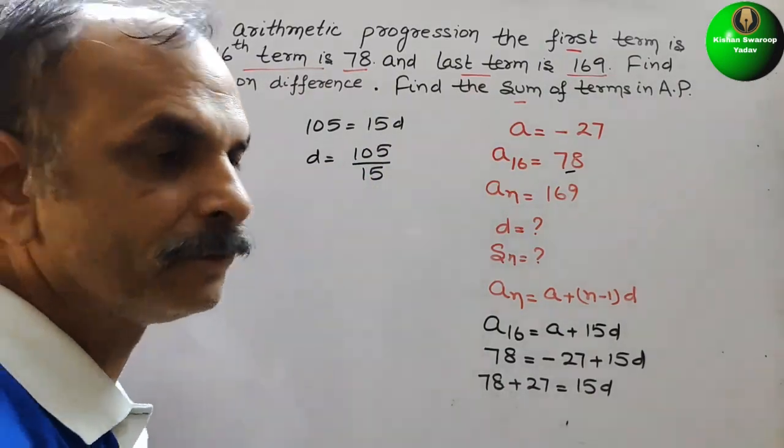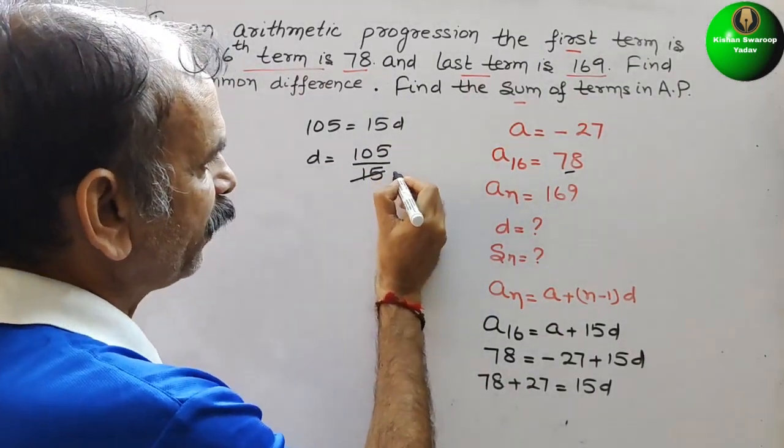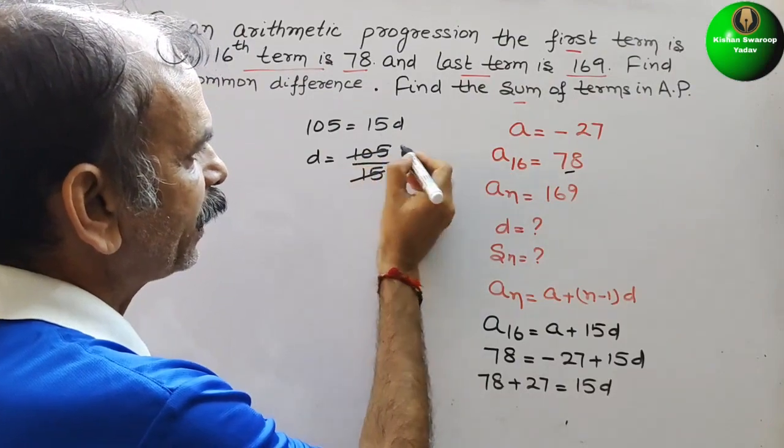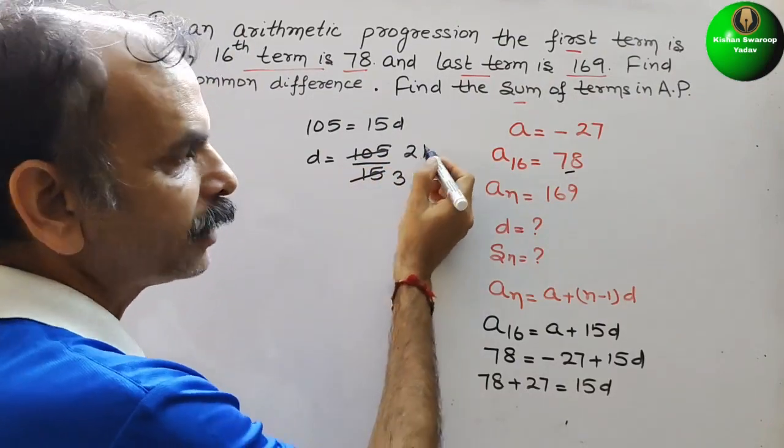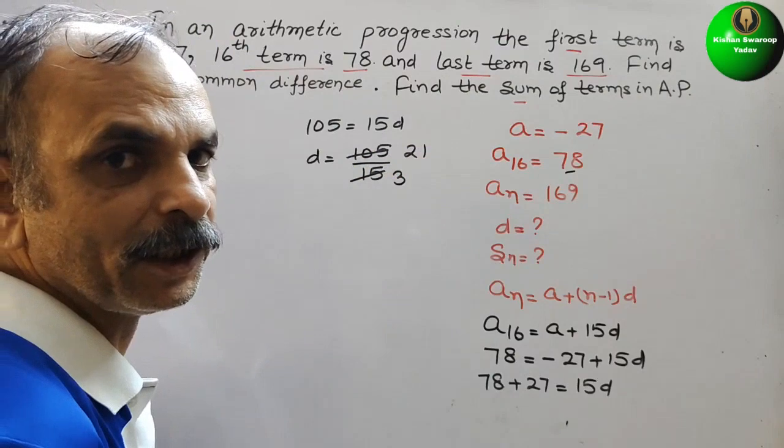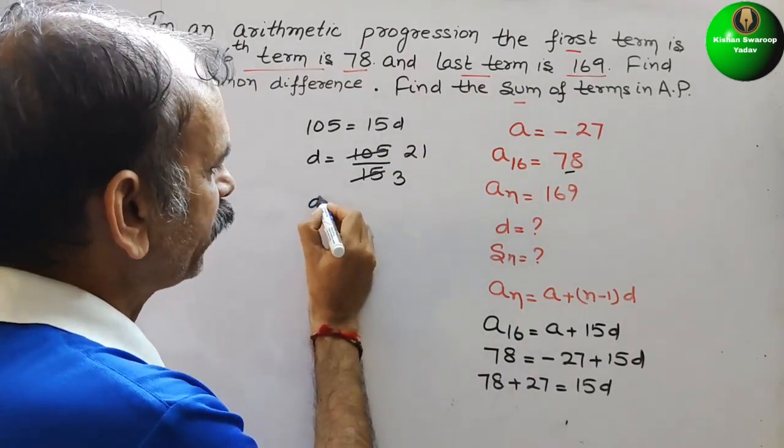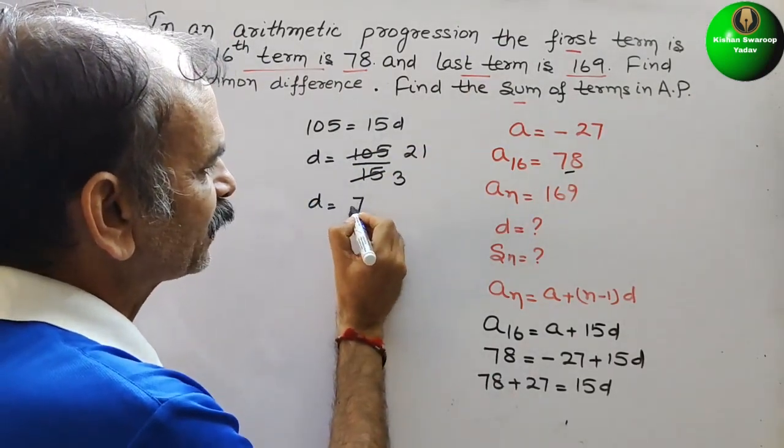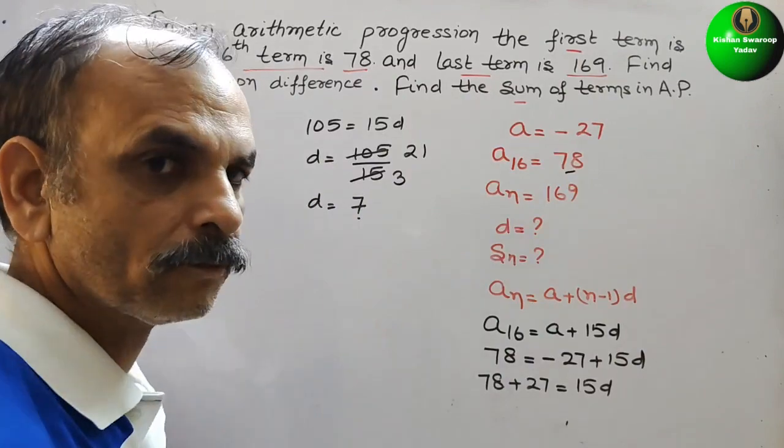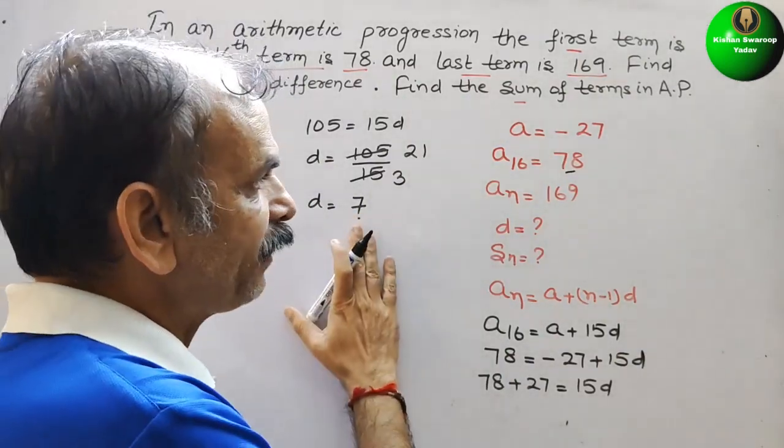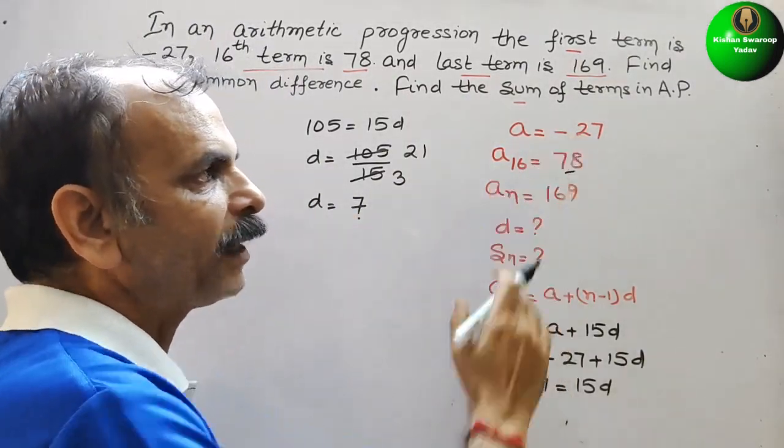D equals 105 by 15. Just reduce it by 5. So here it will become 3 and here 21. Now reduce by 3. Therefore D equals 7. So D is 7, A is minus 27.